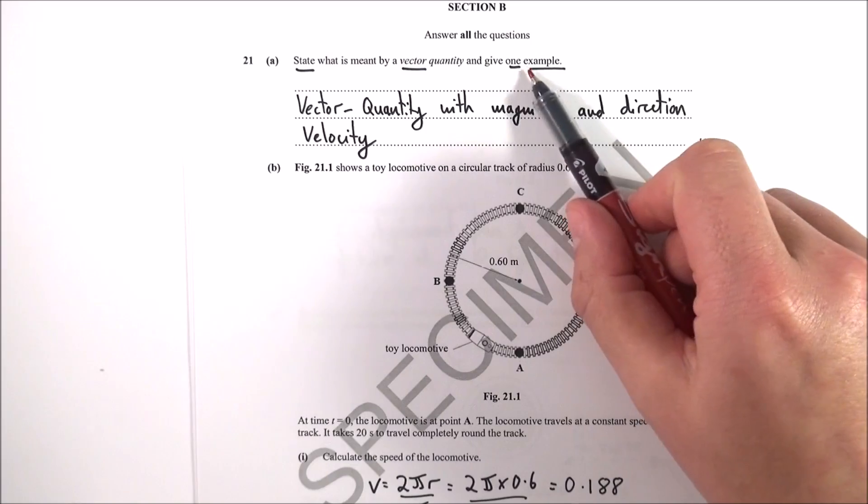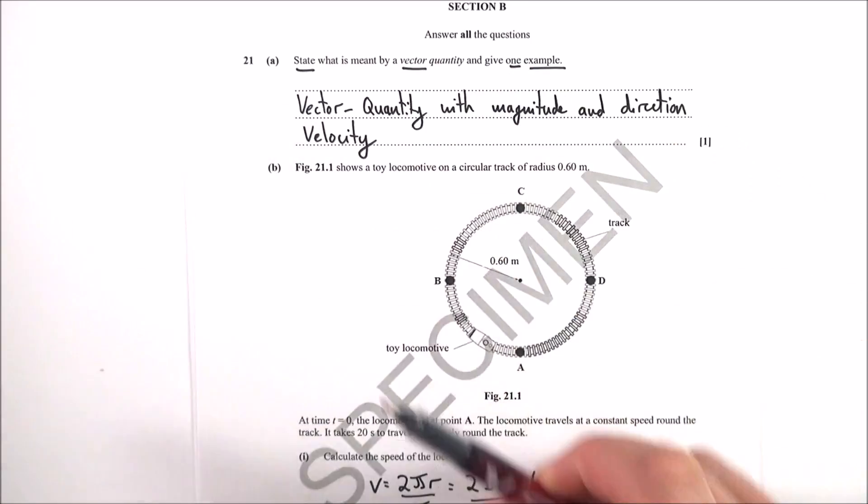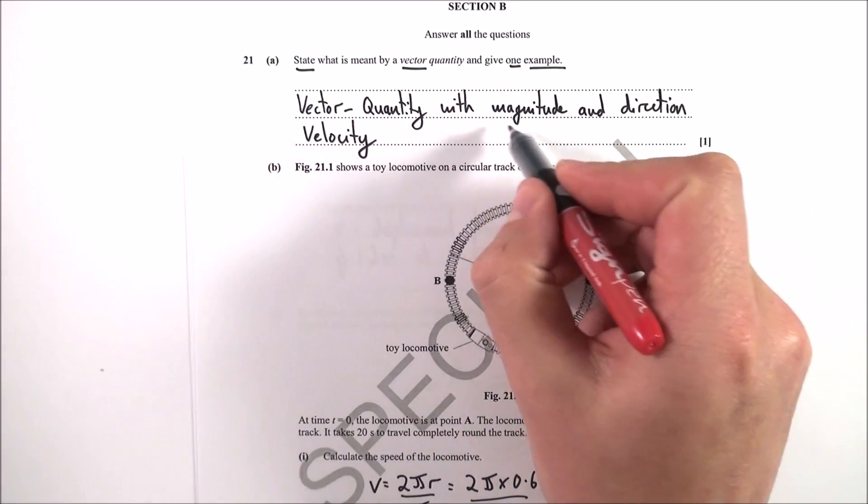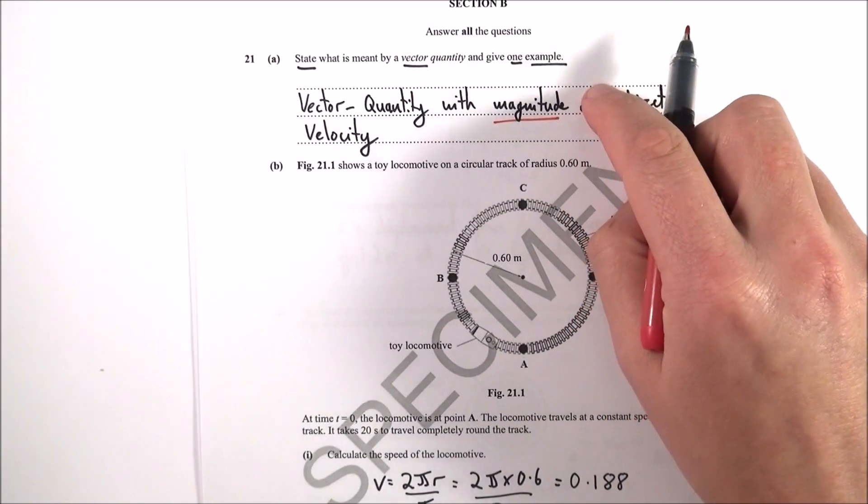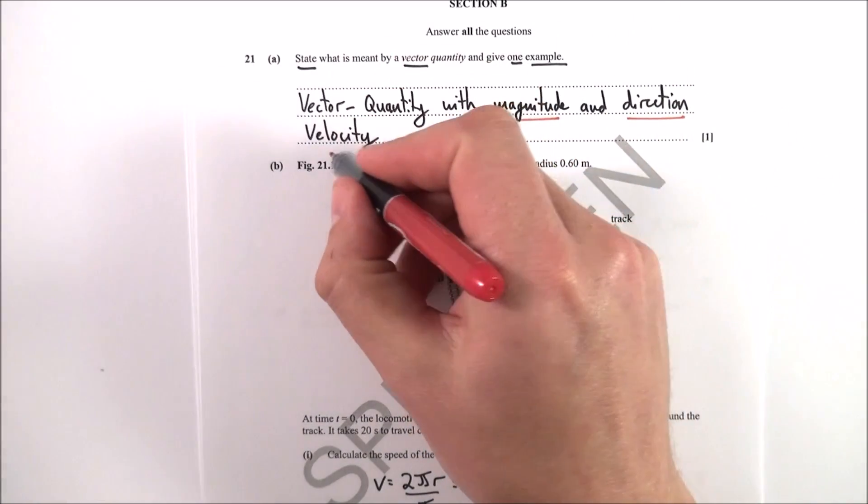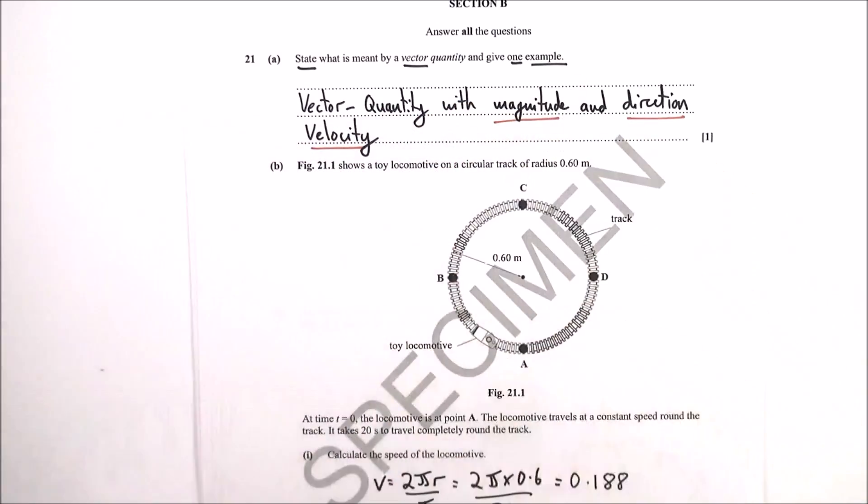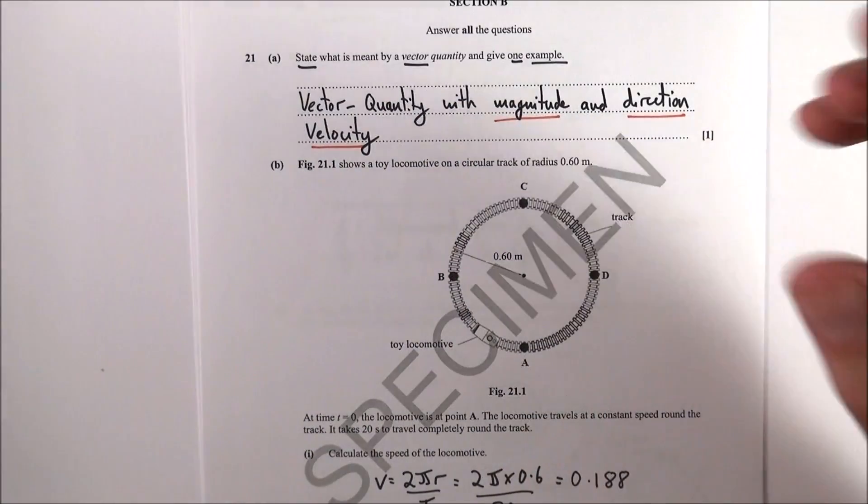Not two, not three, just one example. So a vector is a quantity that has magnitude and direction, straightforward recall. One example is velocity, but there's so many different vectors that you need to know about. You need to have a good list of maybe five, six, seven vectors and also some scalars.